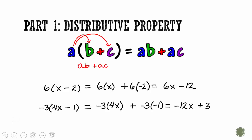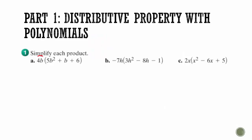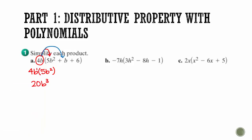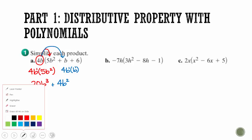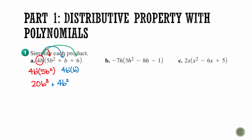We do have to remember our exponent rules, because you're going to get something like this where you need to take 4b and multiply it by 5b squared. We know we can multiply the numbers together to get 20, and then we add the exponents to get b cubed. Then multiply 4b times b — there's no numbers to multiply together, so we have 4b, and b times b gives us b squared. Last one: 4b gets multiplied by 6, giving us 24b.